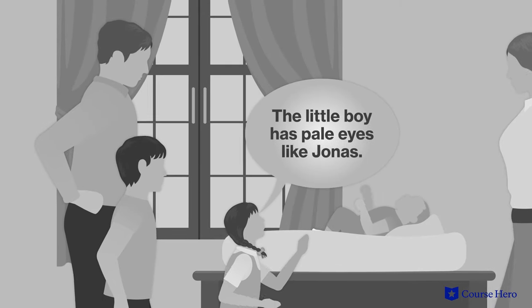In the rising action, Jonas lives with his mother, sister Lily, and father, a nurturer who cares for babies or new children. Father has brought home a new child named Gabriel for extra nurturing, concerned that if the child does not develop more quickly, he will be slated for release.